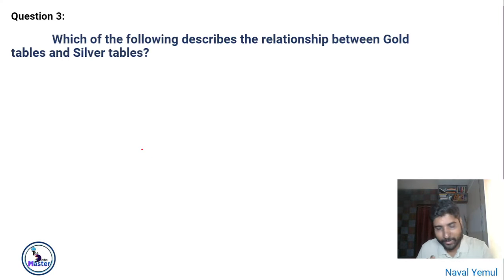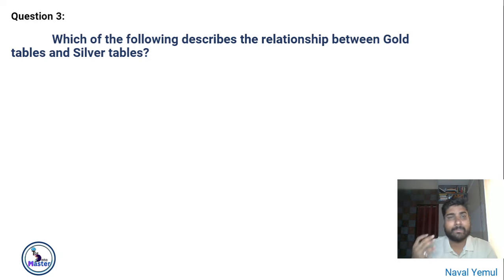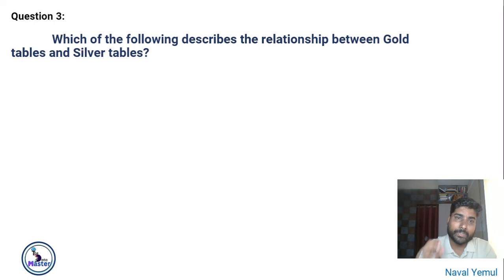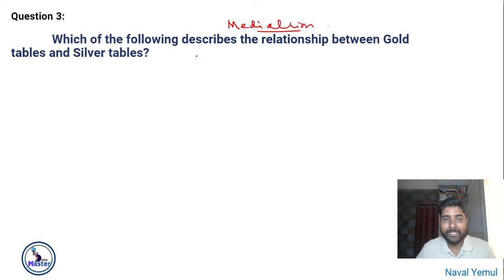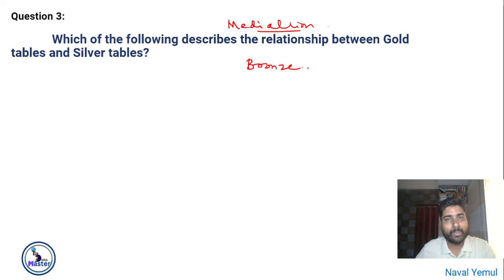The next question is very important and will confuse a lot of people. There will be two or three questions about Bronze, Silver, and Gold tables. When you look at the documentation it seems simple, but during the certification exam the options can all look correct. I strongly recommend watching my Medallion Architecture video — also called multi-hop architecture or Bronze-Silver-Gold architecture. Unlike traditional data warehouses that use a staging layer, in Medallion architecture we put all raw data — including duplicates, nulls, and corrupt records — into the Bronze layer.